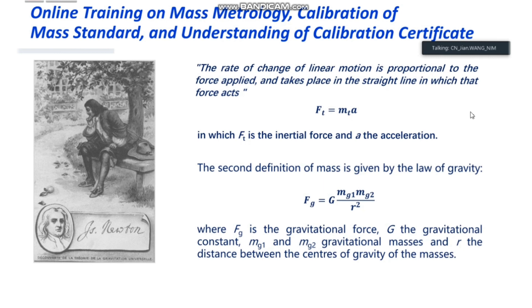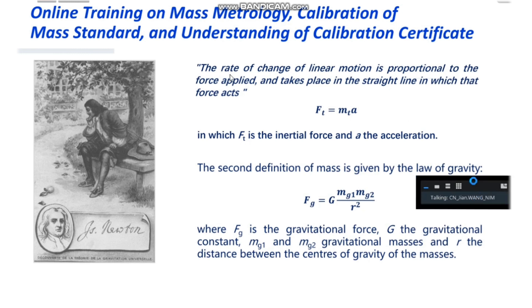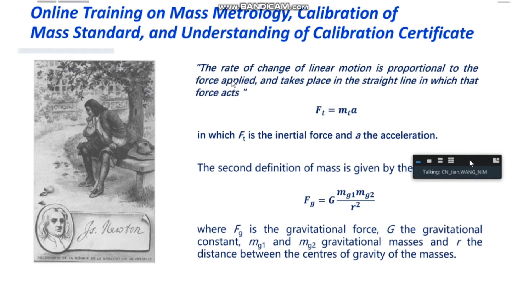Newton made two further definitions physically dependent on each other. The first implicit definition of mass is given in his second law. You can see this second law: the rate of change of linear motion is proportional to the force applied and takes place in the straight line in which that force acts. This is the second law.